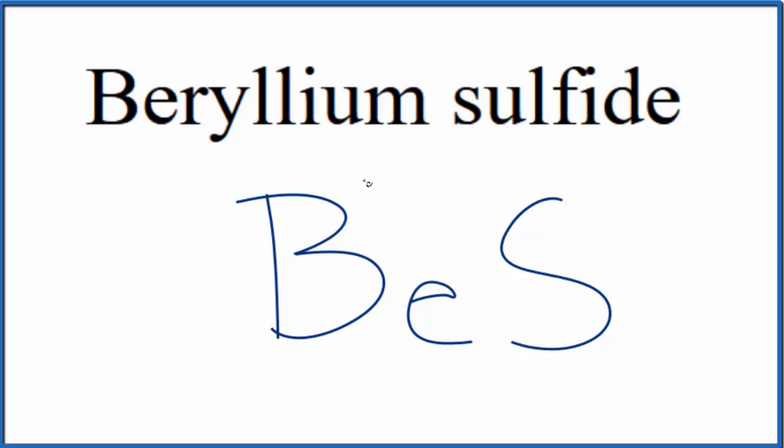So beryllium on the periodic table, that's in group two, that's going to be 2+, and then sulfur, if we look that up, that's 2-.